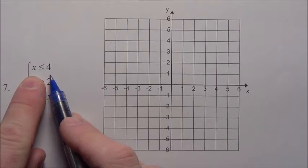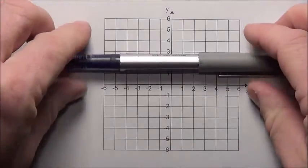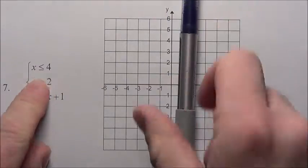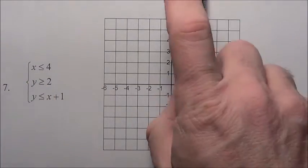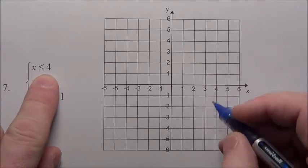Remember these lines: x equals 4 and y equals. Y equals is a horizontal line, x equals is a vertical line. So x less than or equal to 4, so let's draw the line x equals 4.